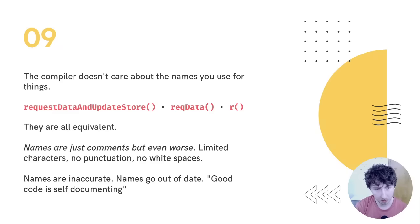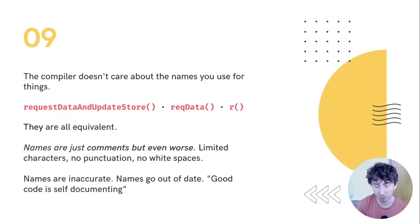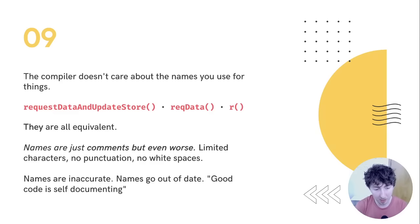The compiler doesn't actually care at all about the names you use for things. I have three functions here: one is requestData and updateStore, the next is recData, and the third is just the single letter R. If these have the same body, the same implementation, the same arguments, they're all the same. You can see examples of this in production: when we ship JavaScript to run in browsers, we compress all function and variable names down to single characters to save transfer space. Names are actually just comments — but even worse than comments, because we have to use around 20 characters, can't use punctuation, can't use white space.